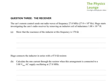Question 3. The car's remote control sends out radio waves of a frequency 27.0 MHz, three significant figures, and it tells you what that is, 27.0 times 10 to the 6 Hz. Hugo starts investigating the car's radio receiver by removing an inductor coil of inductance 1.00 times 10 to the minus 6 henrys.